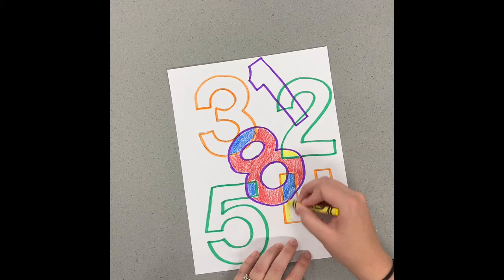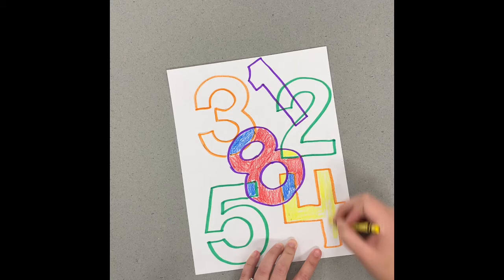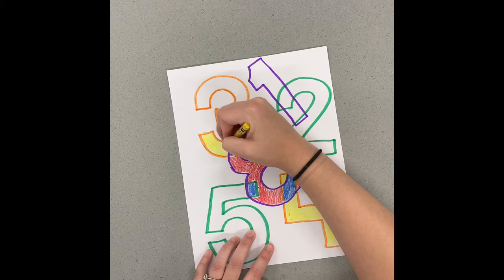Don't do a lot of the same colors next to each other if you can avoid it. Sometimes it's going to happen, but you can see my four is mostly yellow with just that little part overlapping the eight being different. My three will end up kind of the same.